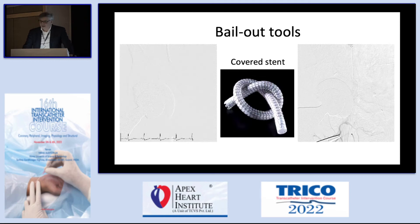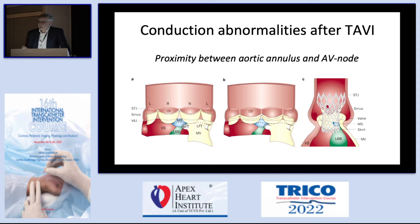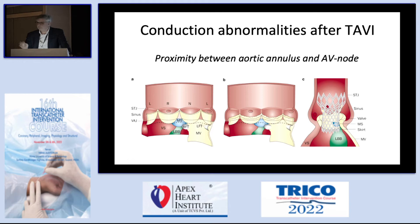TAVI has been associated with a higher rate of new onset conduction abnormality and need for permanent pacemaker. The reason is that below the right and non-coronary cusps, you have the membranous septum, and just below that, the conduction system. The lower you implant your valve, the higher the risk of interfering with the conduction system, causing a new left bundle branch block or even complete heart block requiring a permanent pacemaker.